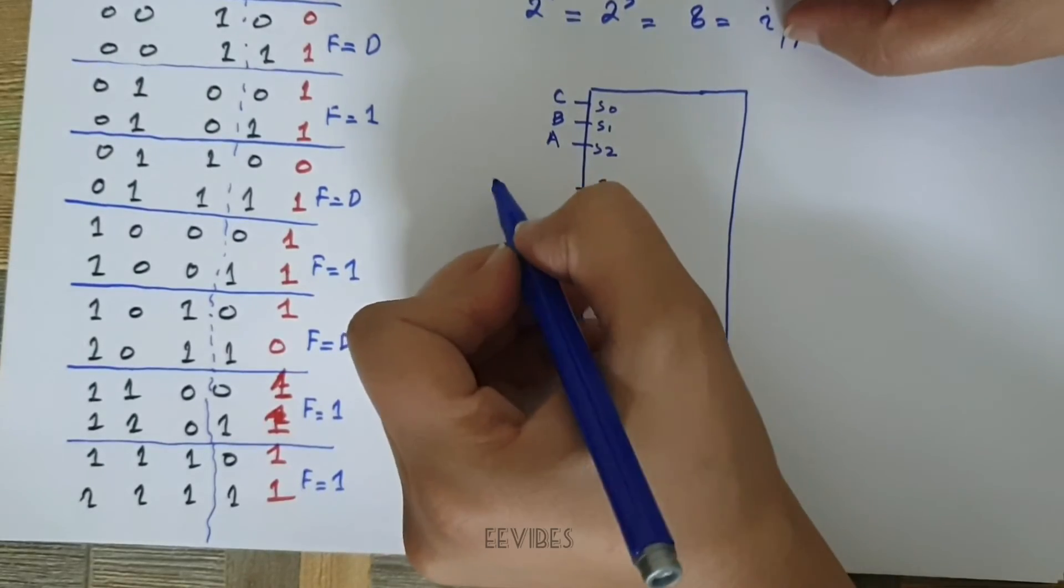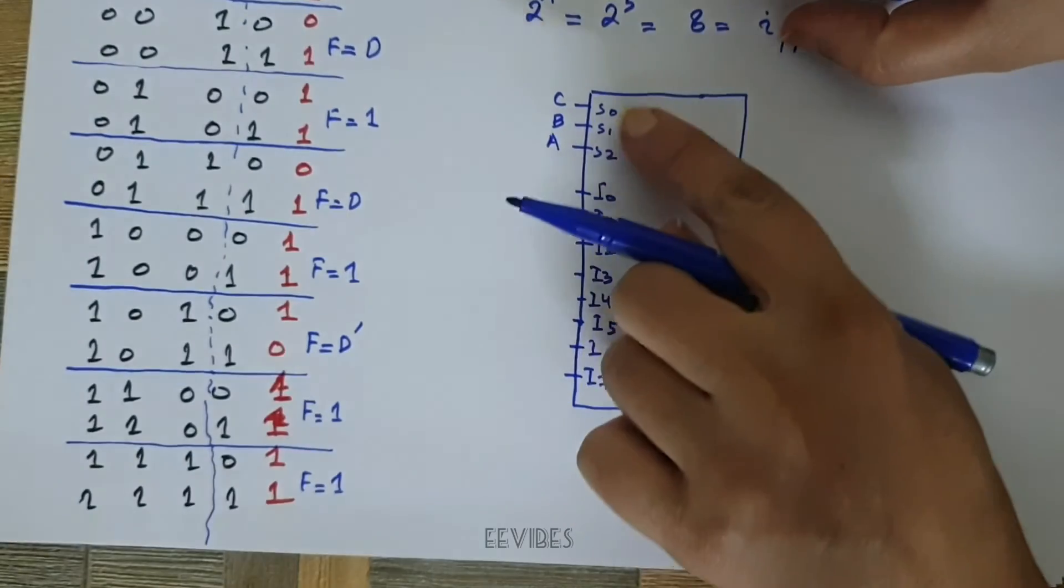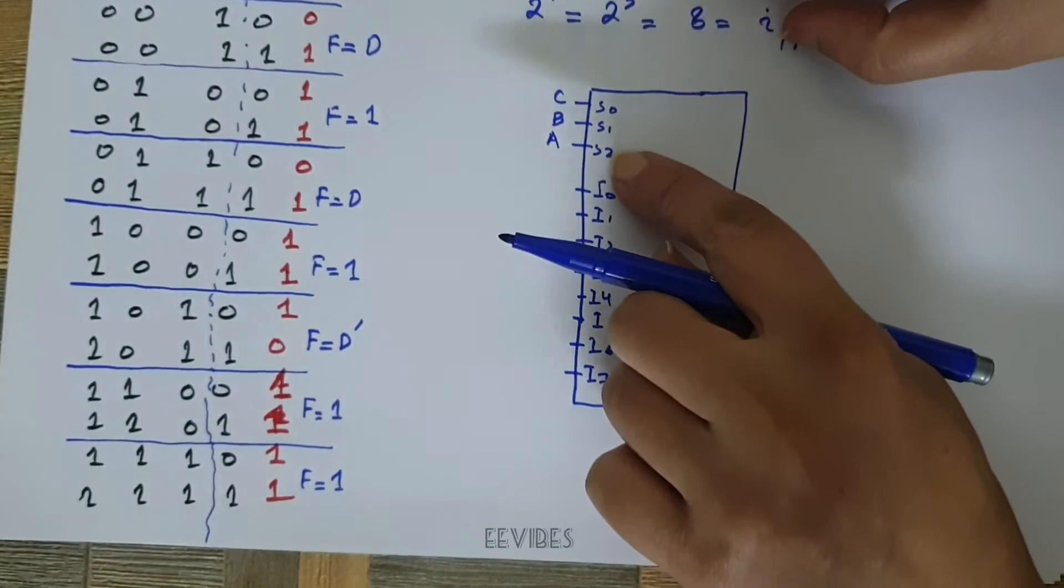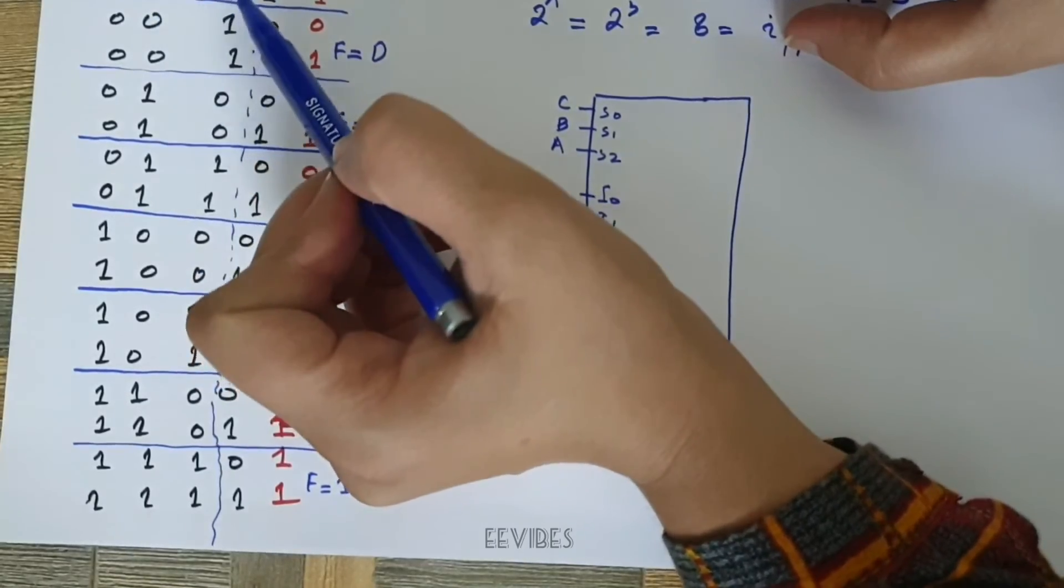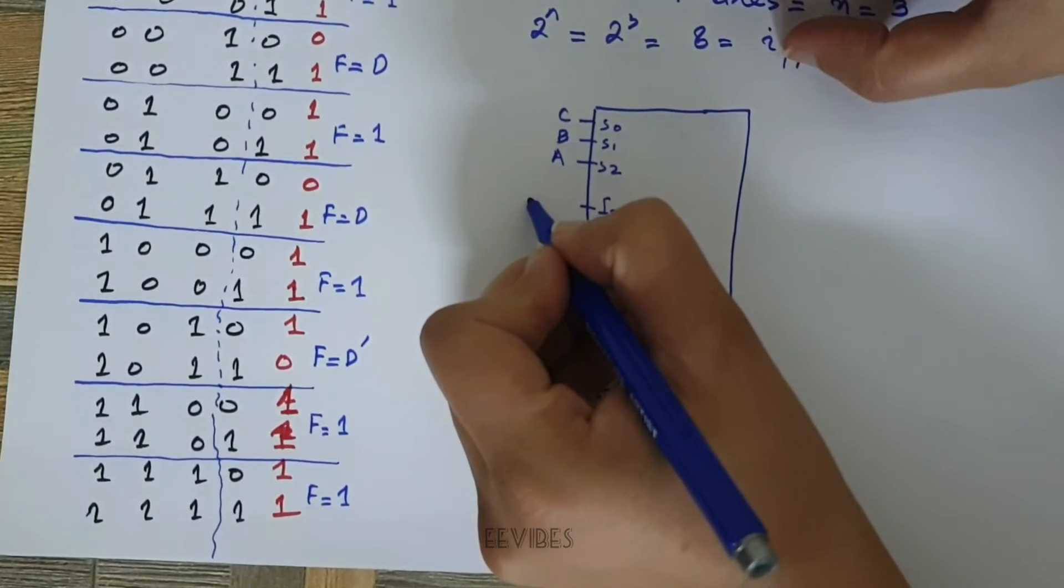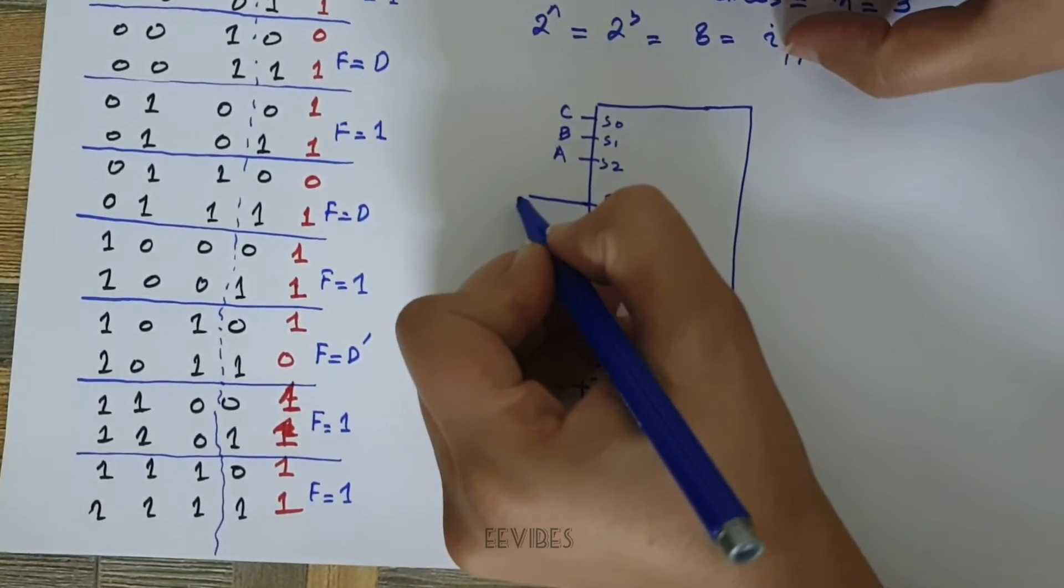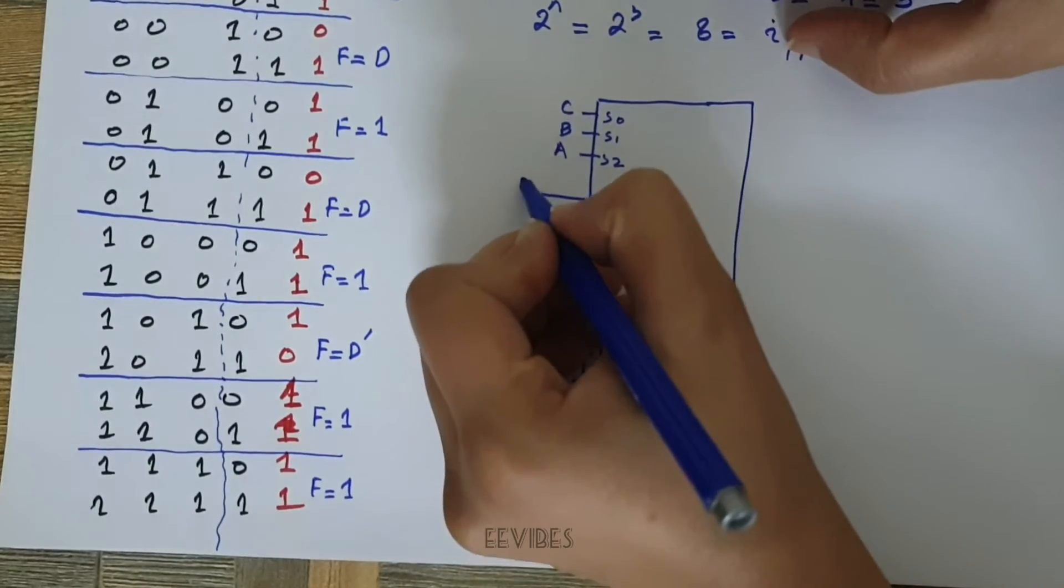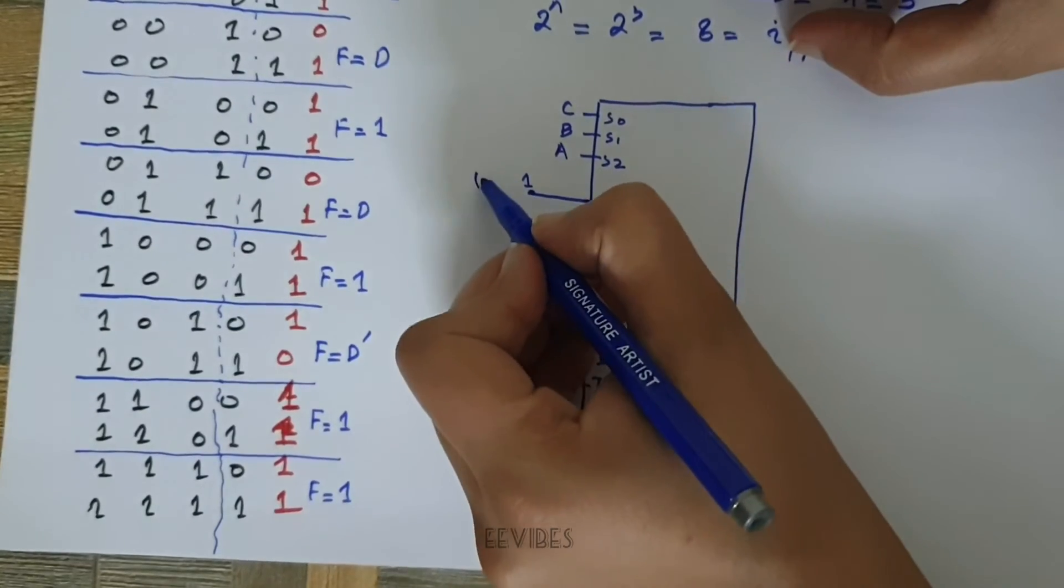For D, you know that F is equal to 1 when the select lines have the combination equal to 0, 0, and 0. F is equal to 1, or you can say the first input is actually at the logic level 1. You can also mark it with some battery or plus 5 volts if you want to show that in terms of the logic level.